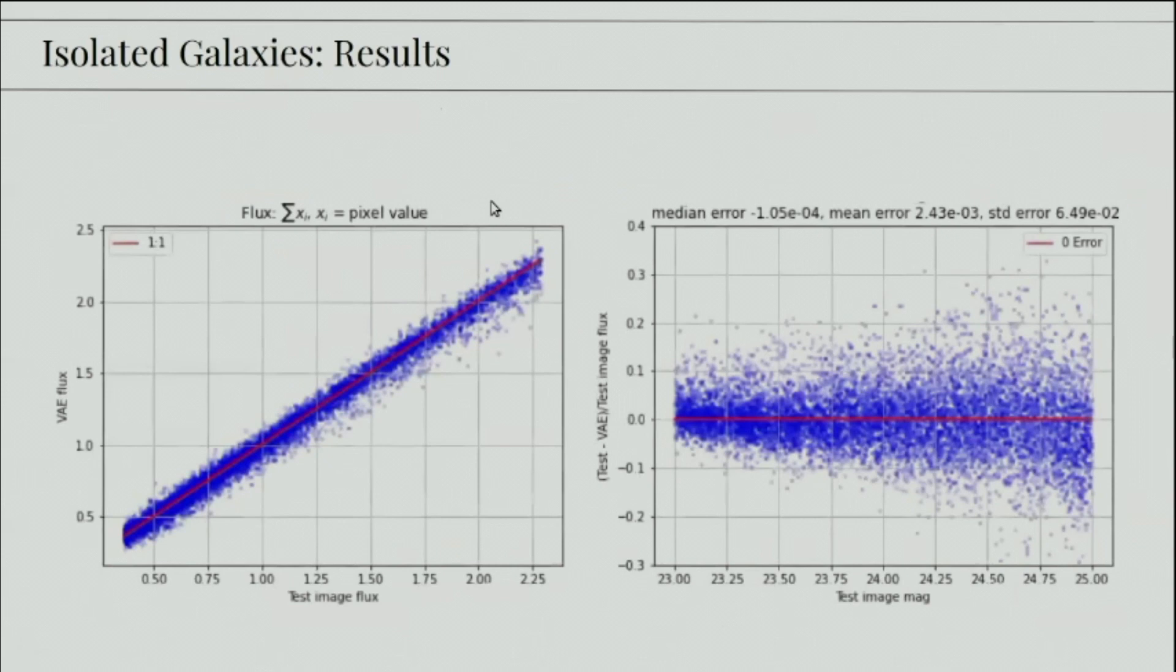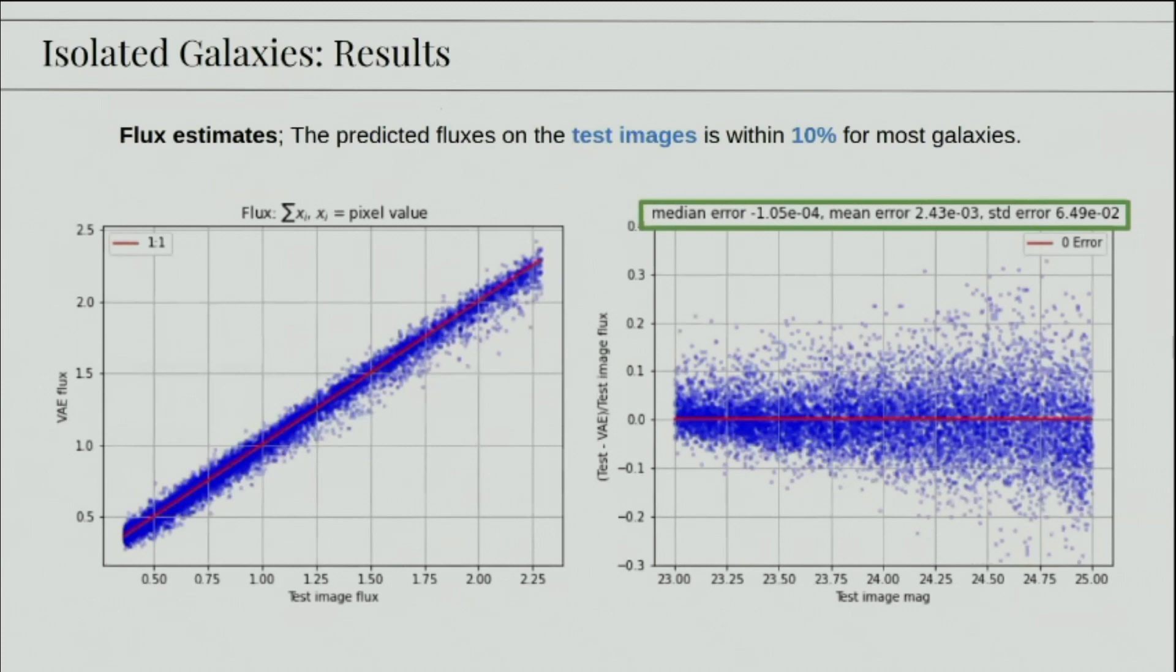So the results finally on the isolated galaxies. In the left plot, you see the test image flux and the variational autoencoder flux, that's estimated by simply adding the pixel values of the image. We see that they correspond very well. When we scale the errors, we can see that the mean error is 2 times 10 to the power minus 3, which is very close to zero. So we can see that it's an unbiased way of estimating or reconstructing these profiles. And also that the standard deviation is within 10%, so the predicted fluxes on test image is within 10% for most galaxies.